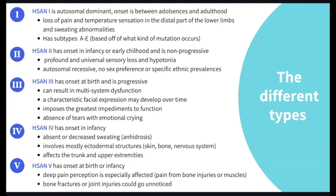HSAN 1 is autosomal dominant with onset between adolescence and adulthood. You can see loss of pain and temperature sensation in the distal part of the lower limbs and sweating abnormalities. This has subtypes A through E based on what kind of mutations occur.